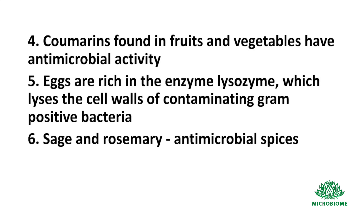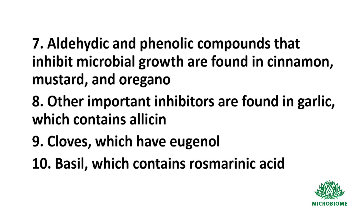Eggs are rich in the enzyme lysozyme, which lyses the cell walls of contaminating gram-positive bacteria. Sage and rosemary are antimicrobial spices. Aldehydic and phenolic compounds that inhibit microbial growth are found in cinnamon, mustard and oregano. Other important inhibitors are found in garlic, which contains allicin; cloves, which have eugenol; and basil, which contains rosmarinic acid.